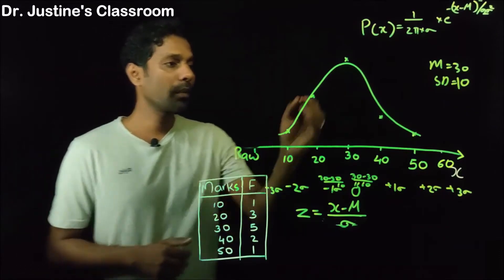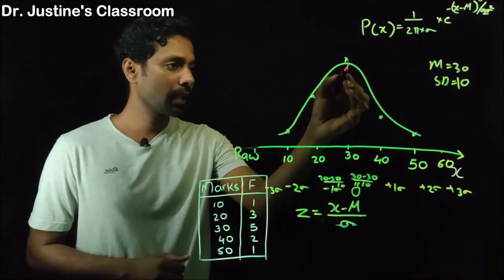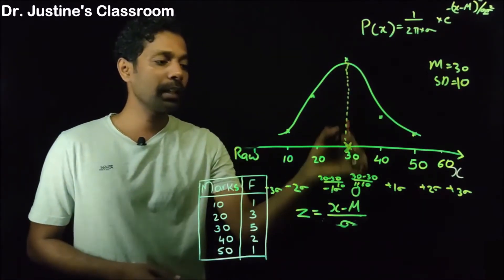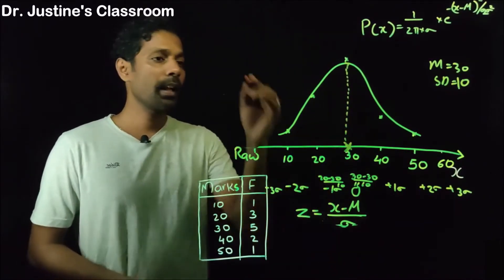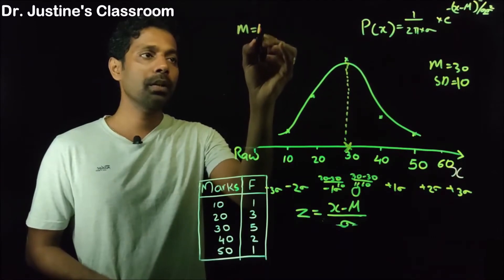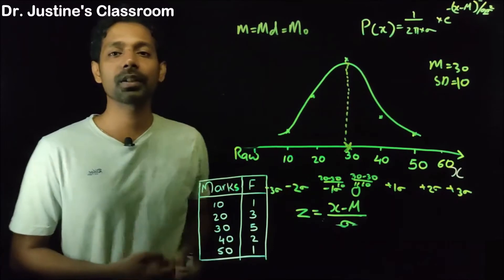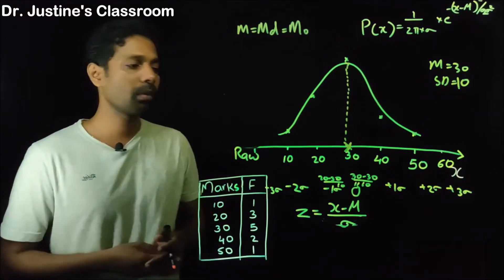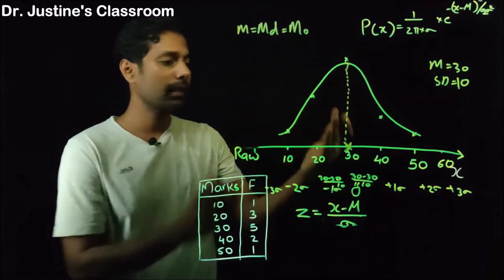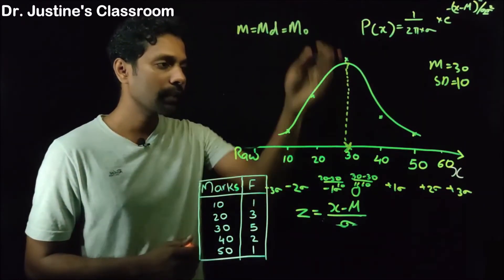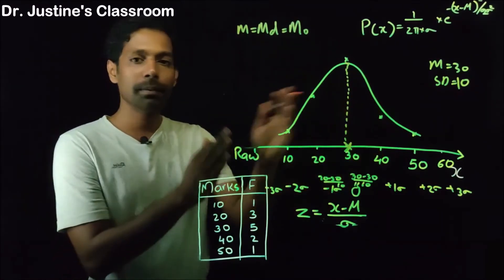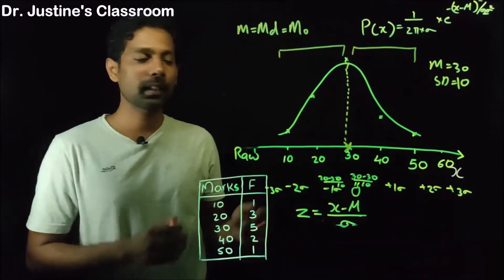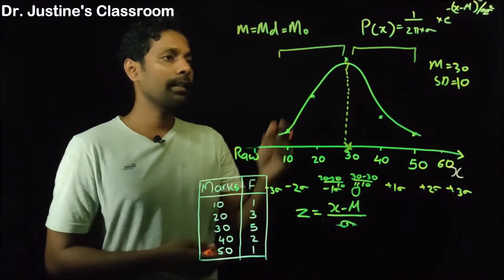What are the characteristics of a normal curve? If you take the highest peak point and find what it corresponds to on the x-axis, that point is the mean of the distribution. This mean will be equal to the median, which will be equal to the mode — mean equals median equals mode. This is a very interesting characteristic of normally distributed data. Another characteristic is its symmetrical nature: the center line divides the distribution into two equal halves, with equal numbers of people on each side.